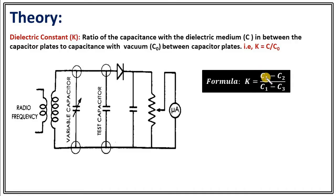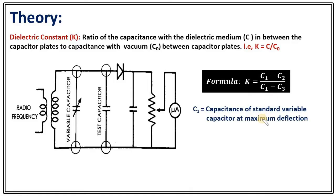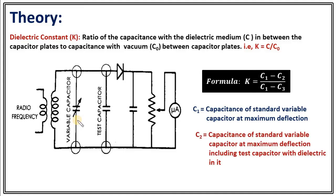C1 minus C2 is nothing but C, and C1 minus C3 is nothing but C0. C1 is the capacitance of the standard variable capacitor at maximum deflection. Without the test capacitor connected, the ammeter shows maximum deflection at a particular value of the variable capacitor, and that value is C1.